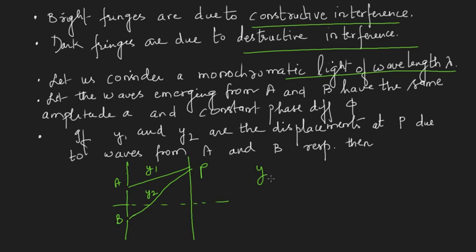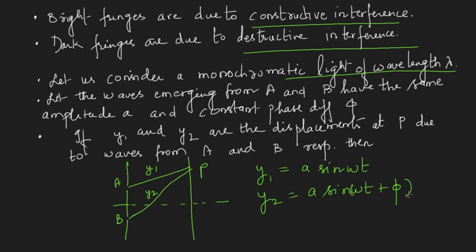Let y1 equal a sin(ωt) — this is equation 1 — and y2 equal a sin(ωt + φ) — this is equation 2.